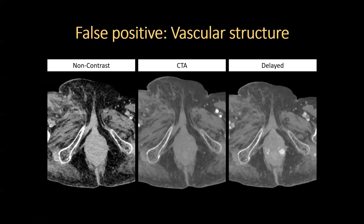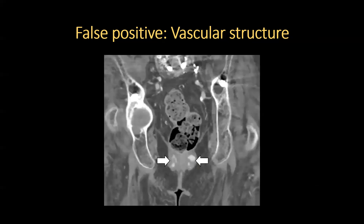In the same patient, active extravasation was also reported in the perineum, which would be unexpected since this area was not accessed. On non-contrast and arterial phase images, we see no extravasation of contrast material. On the delayed phase, there are lobulated contrast-filled structures surrounding the anus, consistent with hemorrhoids — dilated veins that you would expect to fill on a delayed phase. A coronal delayed phase image again confirms these are hemorrhoids and not active extravasation.